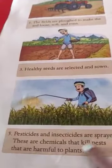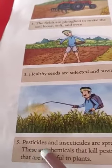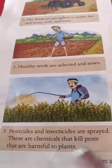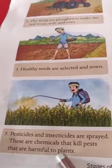Fifth stage: pesticides and insecticides are spread. These are chemicals that kill pests that are harmful to plants.